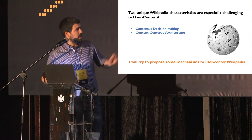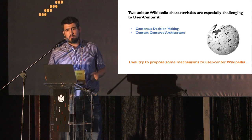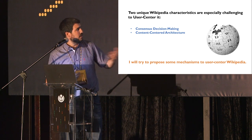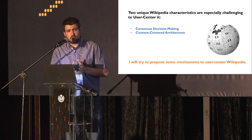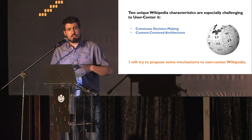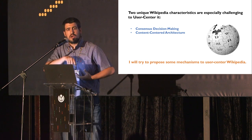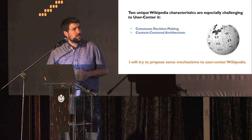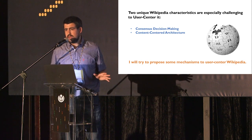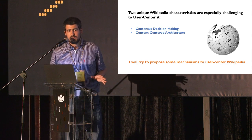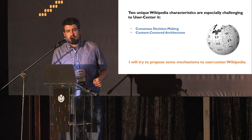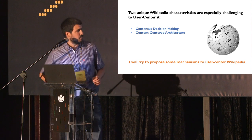The second unique characteristic is the outcome — the resulting product. The resulting product is content-centered, totally. It's not centered on the users; it's the user that has to go around the product. These two characteristics, which are unique to Wikipedia and essential to make it work, present very specific challenges in order to implement the user-centered design process.